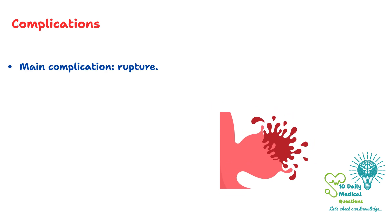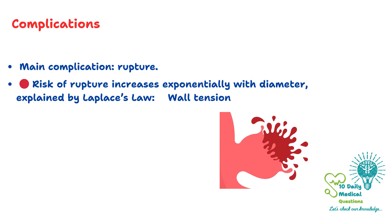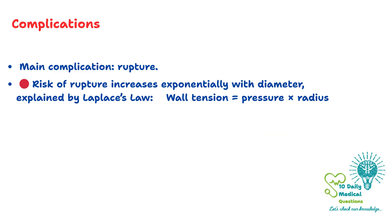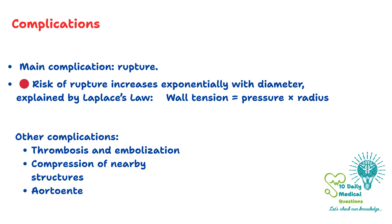Rupture is a life-threatening emergency. The risk of rupture increases significantly with aneurysm size, which can be explained by Laplace's Law — wall tension increases proportionally with both pressure and radius, so as the aneurysm grows, the wall becomes increasingly unstable. Other complications can include thrombus formation with distal embolization, compression of surrounding structures, and, rarely, formation of an aortoenteric fistula.